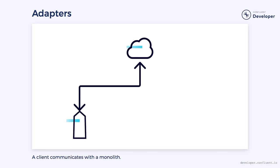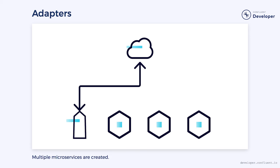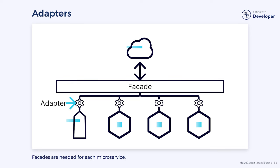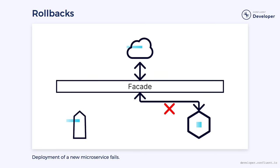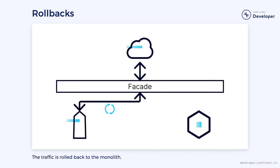As we make use of the Strangler Fig pattern, there are some things we need to be wary of. Each system we replace will require us to create an adapter to route requests to the right place. It's possible to find ourselves trying to replace too much functionality at the same time, ending up with so many adapters it can be difficult to manage. Remember, the goal isn't to replace the entire system at once — we want to do it slowly and in a controlled fashion. Additionally, once we change from the old system to the new, it's possible we'll discover problems we didn't anticipate. Having a rollback plan in place is critical to make sure we can recover from any potential failures.